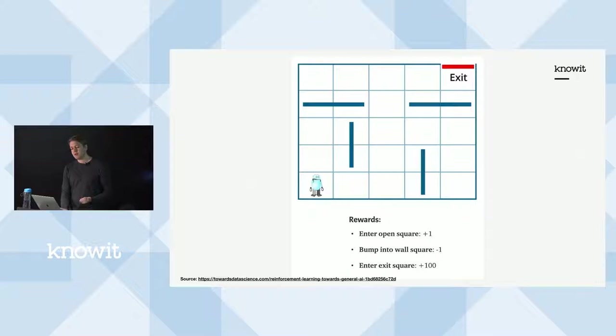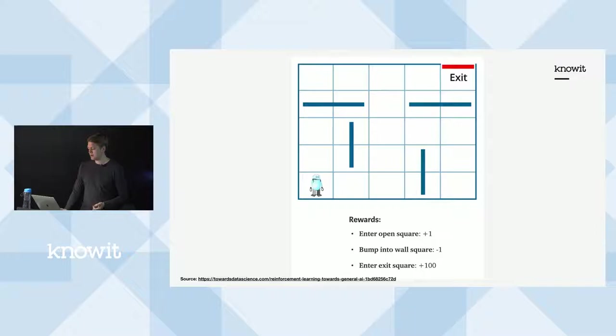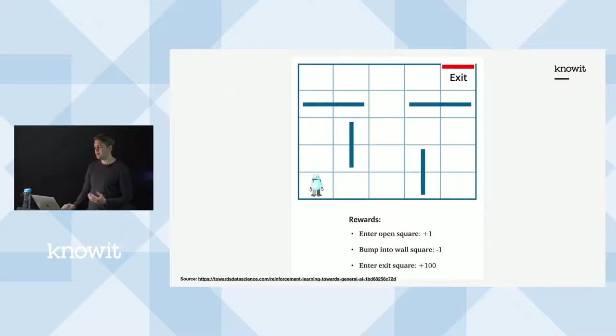Here's another example with a robot in a maze environment. You have the rewards at the bottom and the agent — the robot — in the bottom left corner. The robot chooses to make an action, and based on the rewards it gets, it should figure out that it wants to get to the exit point of the maze.